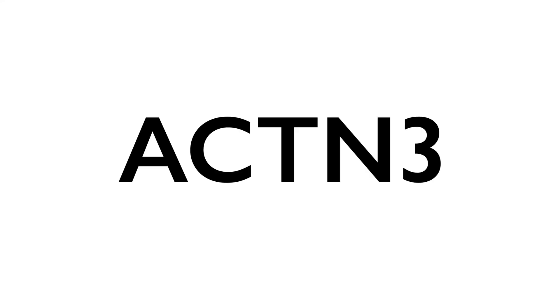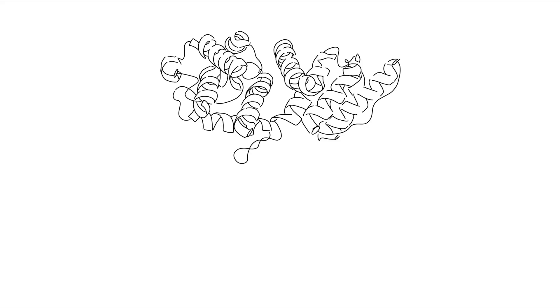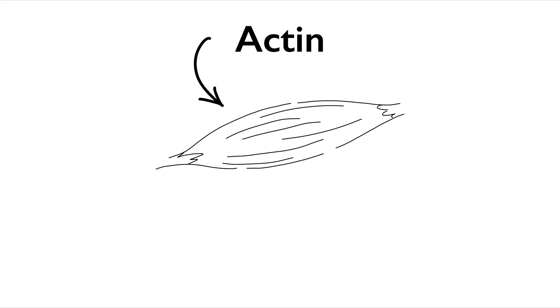Your ACTN3, more commonly known as the speed gene, is another famous example of this. It encodes the structural protein alpha-actinin-3 that interacts with actin, a key protein for muscle contraction.